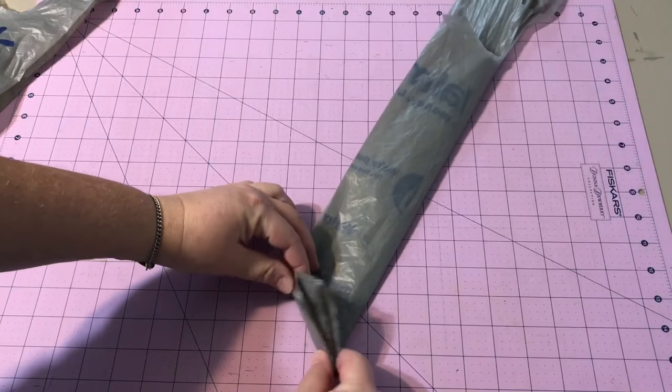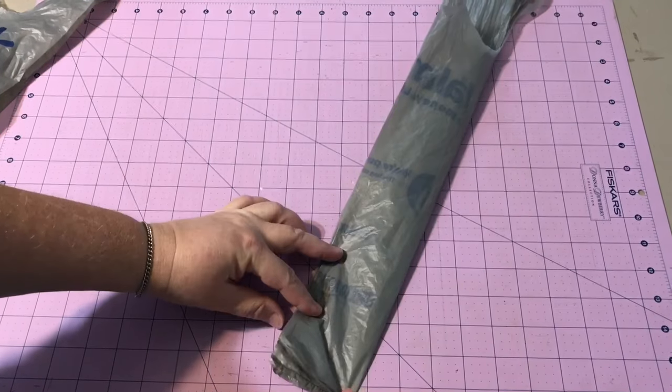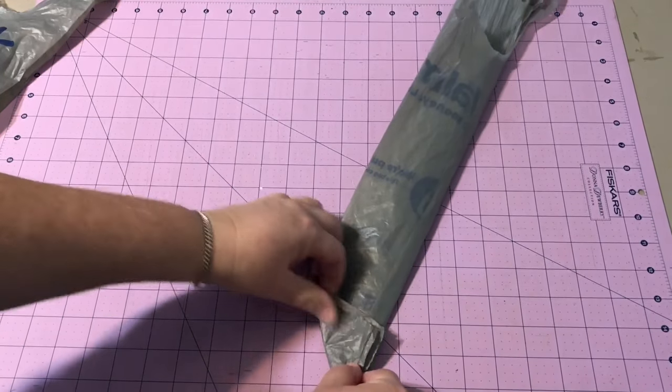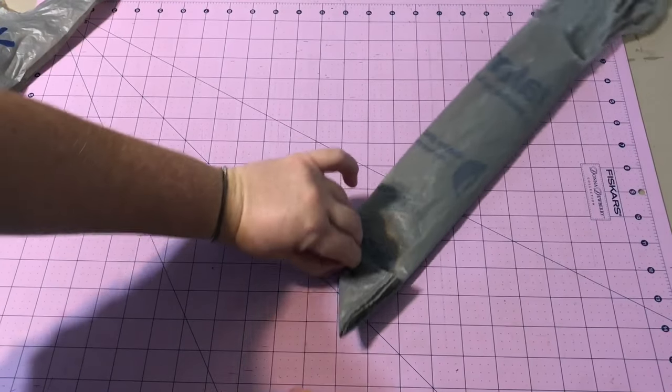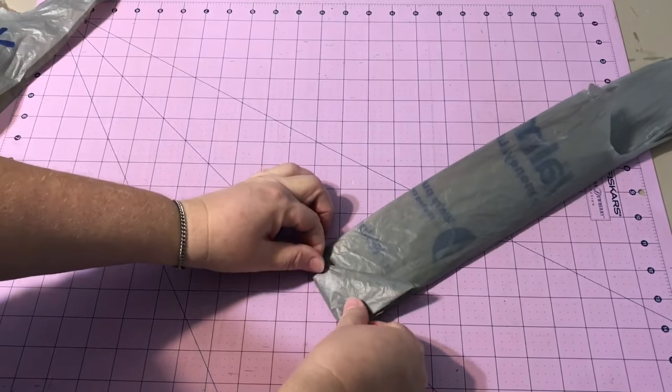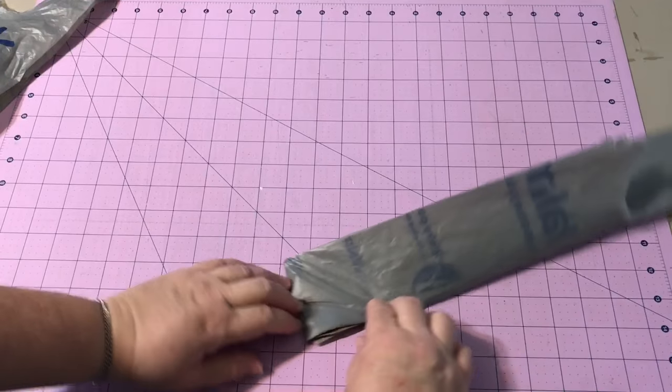And then you just take it, put your finger in the corner, fold it up so you're starting your triangle shape. And then just keep folding.